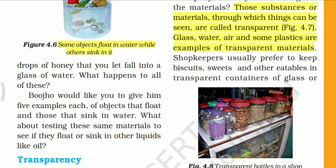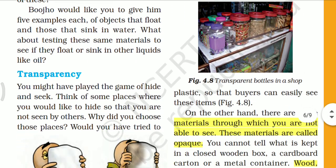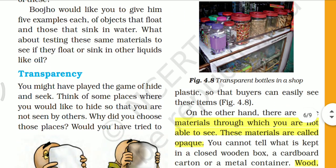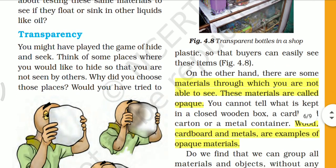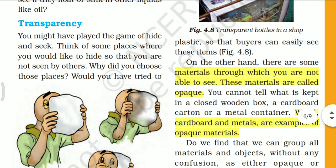So the next property is transparency. Transparency means the objects through which we can see across — those objects are known as transparent materials.